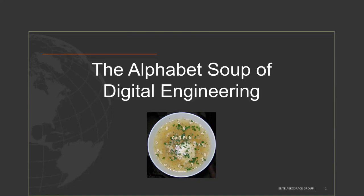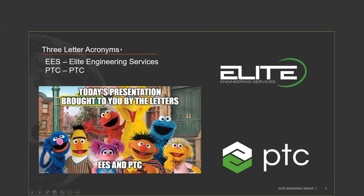Thank you everyone for joining today. We'll be talking about what I like to refer to as the alphabet soup of digital engineering. There are lots of acronyms, so I'll try to explain what each of these are. The ultimate goal today is to look at the history and where we're going with digital engineering, what it is, and how it's useful. The three-letter acronyms are brought to you today by EES — Elite Engineering Services — as well as PTC, which historically stood for Parametric Technology Corporation but has since dropped that name.